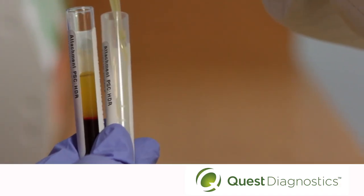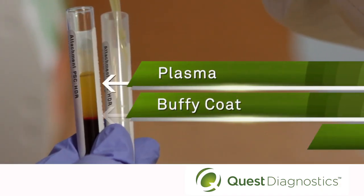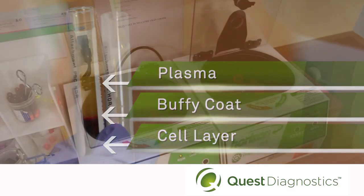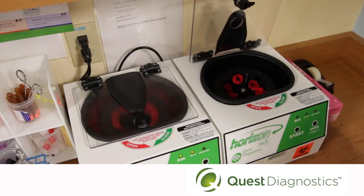Notice that you can still clearly define the three layers: the plasma, the buffy coat, and the cell layer. The plasma you separated goes back into the centrifuge for a second spin.